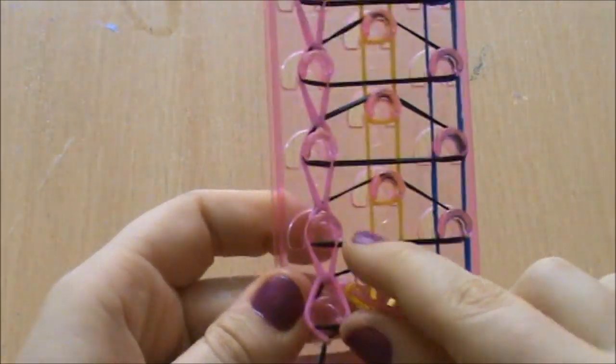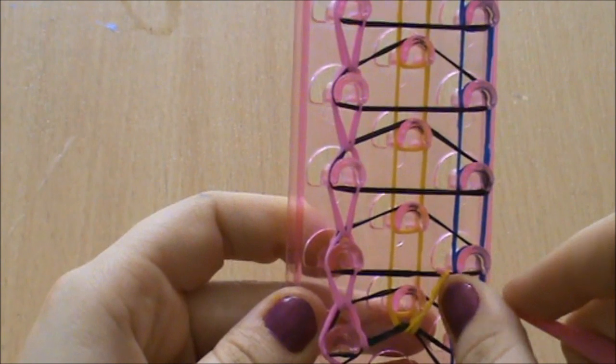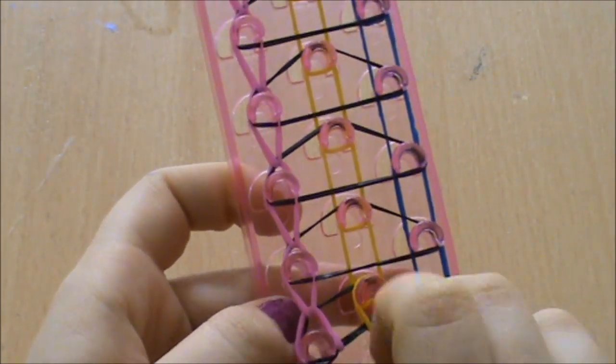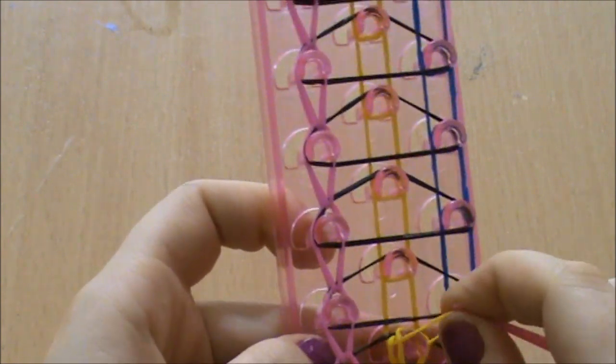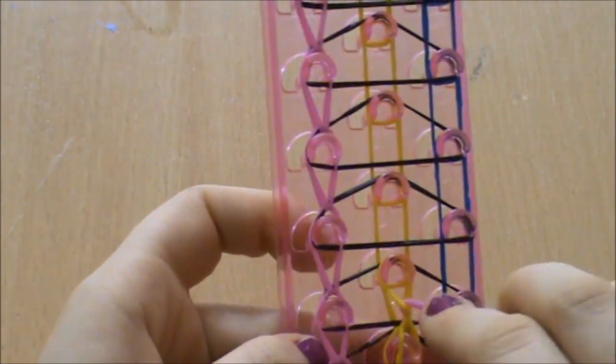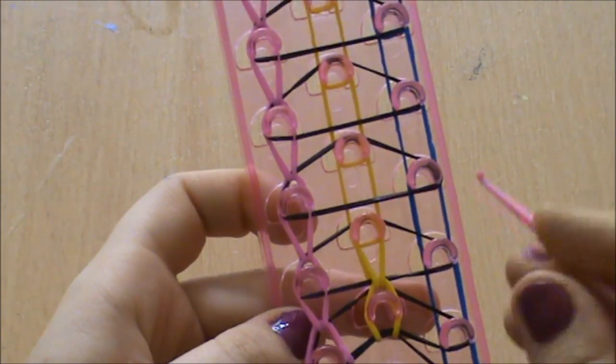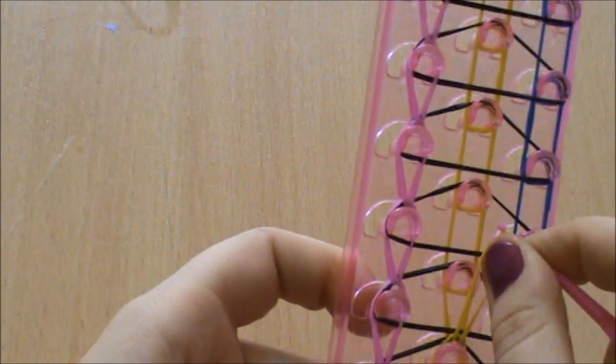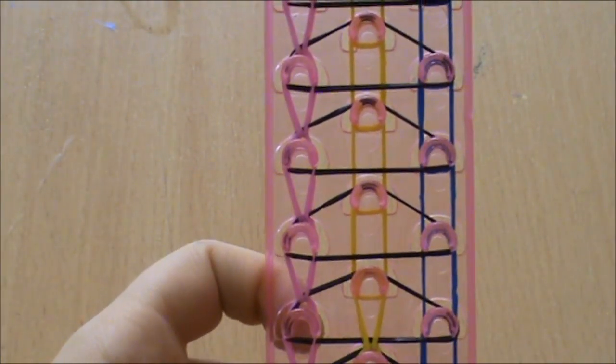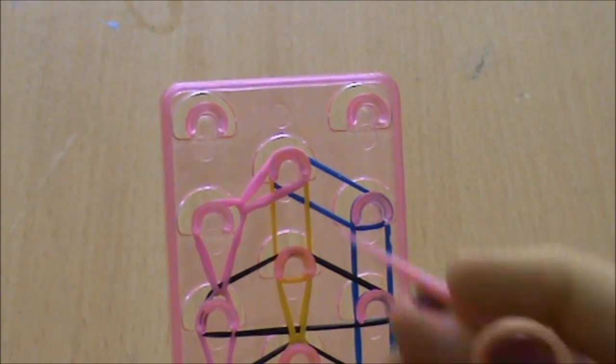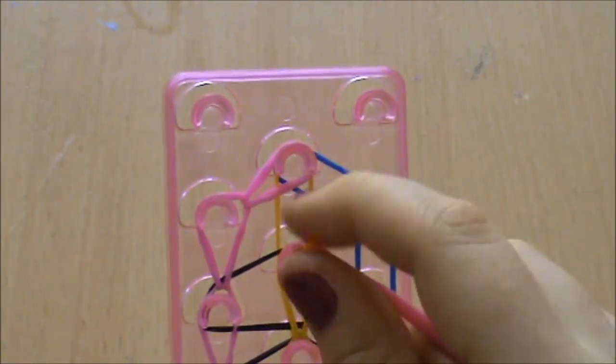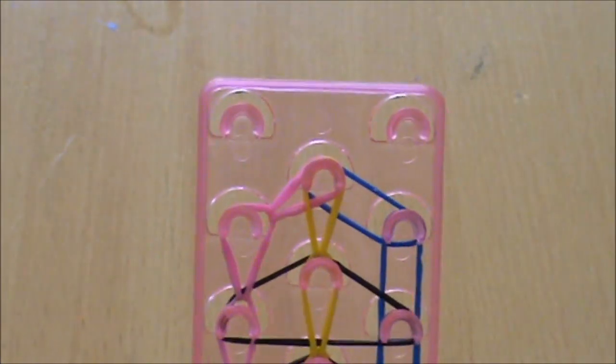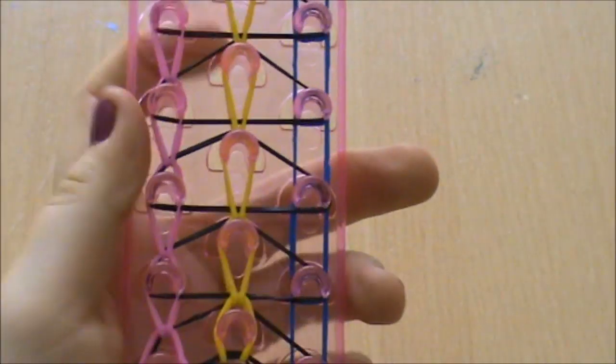You go all the way to the bottom again and you take your middle colour and you're hooking the middle colour over the top of the peg in front. It's a lot easier than the side colours because you don't have any of the centre bands or the triangle bands to move out of the way. And you just continue doing that all the way up. And then just like before you just take the centre band and pull it over the top peg.